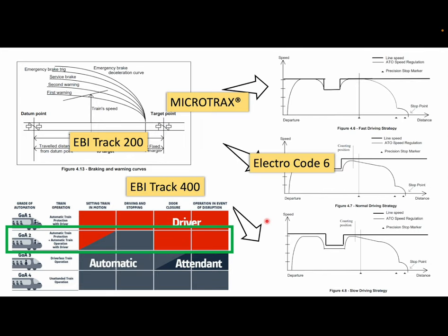Some products using frequency modulated coded track circuits that I could find information on include AB Track 200, 400 Microtracks by Ansaldo, and Electrocode. There are likely more, and if you know of them please put them in the comment box below.